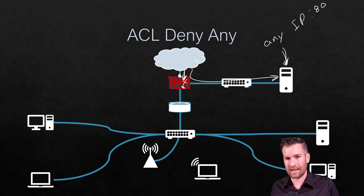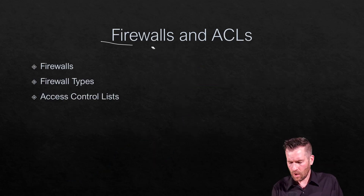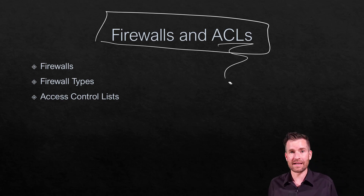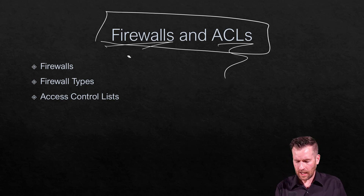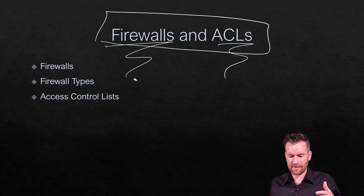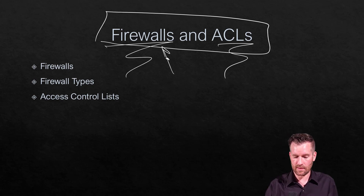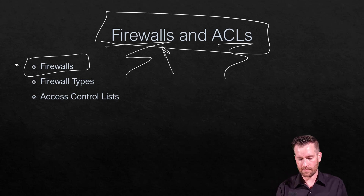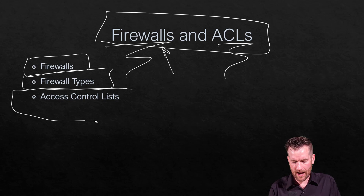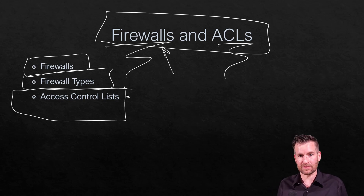There you have it. Firewalls and access control lists work together to secure your network, although ACLs do have many other functions and firewalls also have many other features beyond simply blocking or permitting traffic. We covered the basic concept of what a firewall is, different firewall filtering types, and how access control lists function applied to interfaces to permit or deny traffic. Hope this video is helping you out.